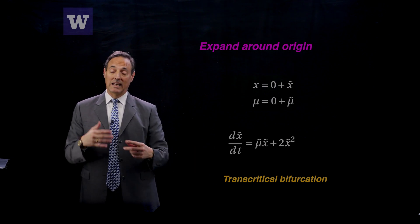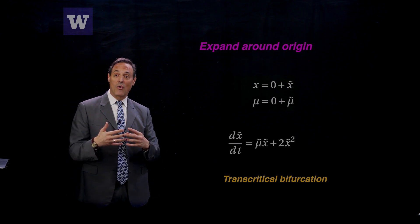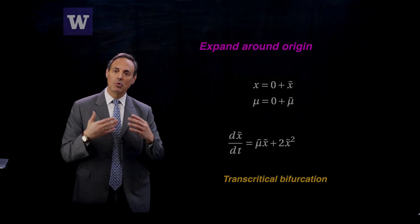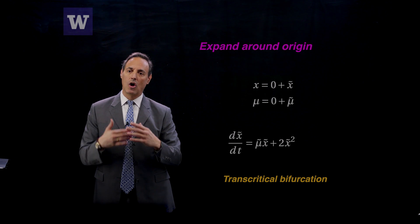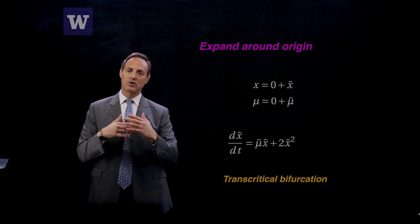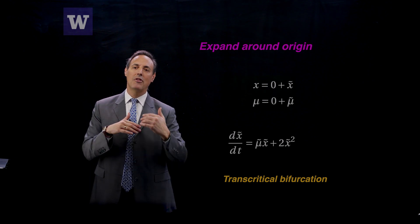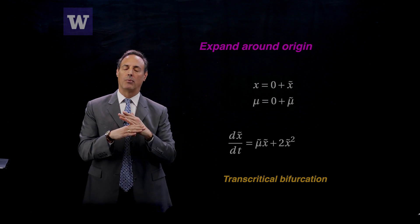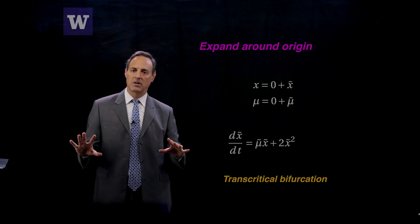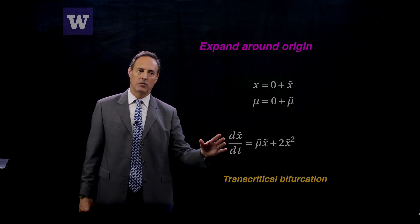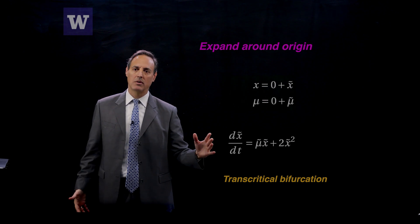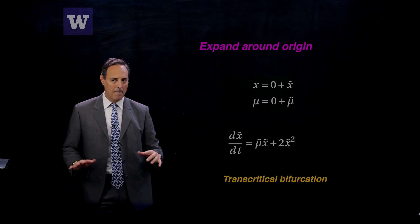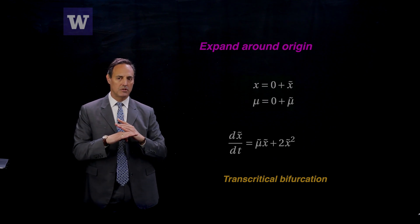Given that result, what we know happens at a transcritical bifurcation is you get a switch in stability. One solution branch loses stability, and the other one gains stability at the intersection point. That's canonical for the transcritical bifurcation — we worked that whole example out in the last lecture. Nothing else can happen — there's just a switch in stability.